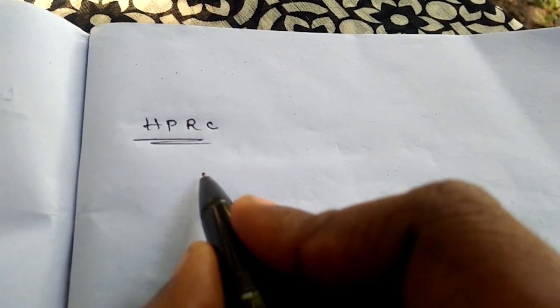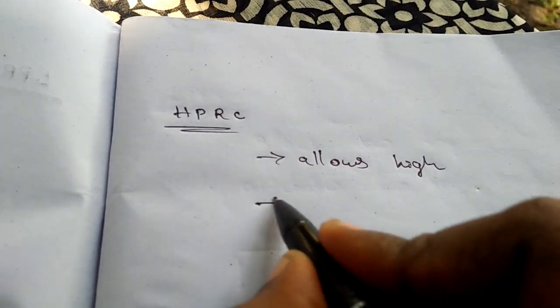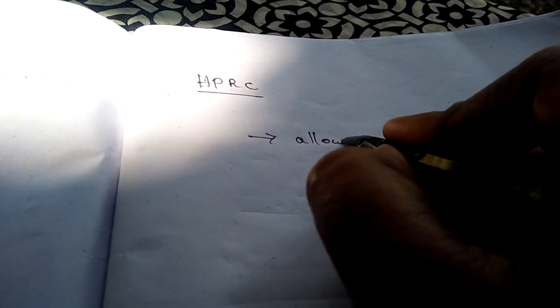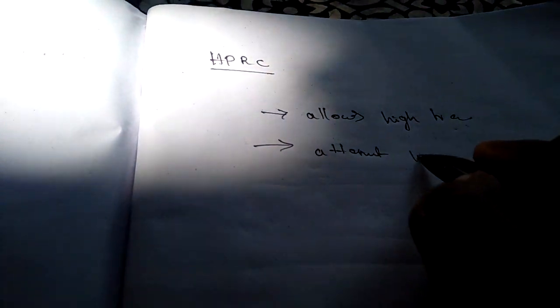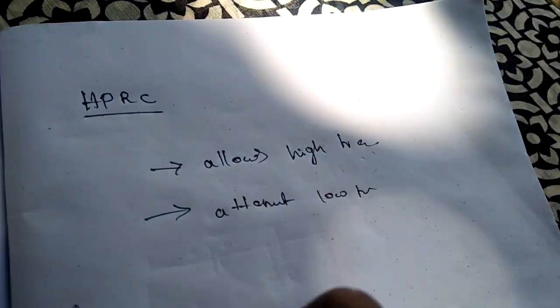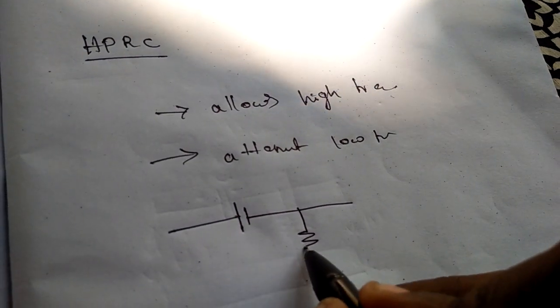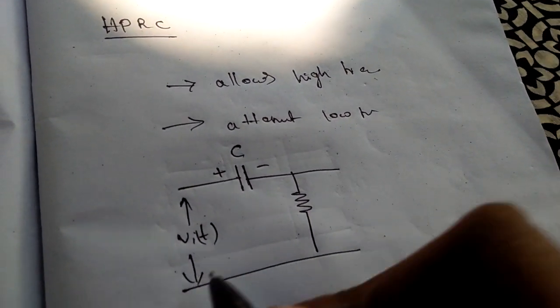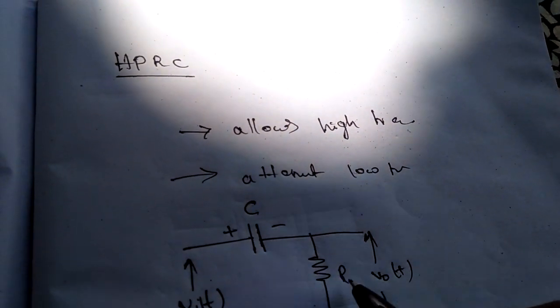Coming to the high-pass RC, the circuit allows high frequency signals and attenuates low frequency signals. In the high-pass RC circuit, at the input port we have a capacitor, and at the output port we have a resistor.